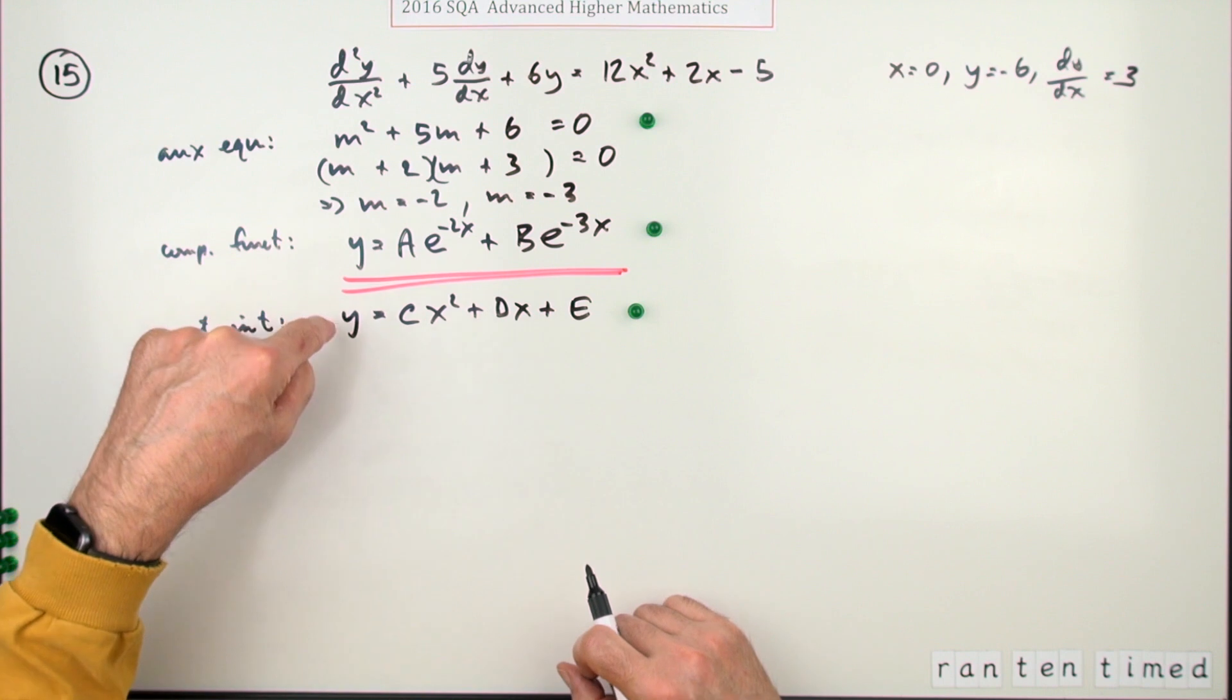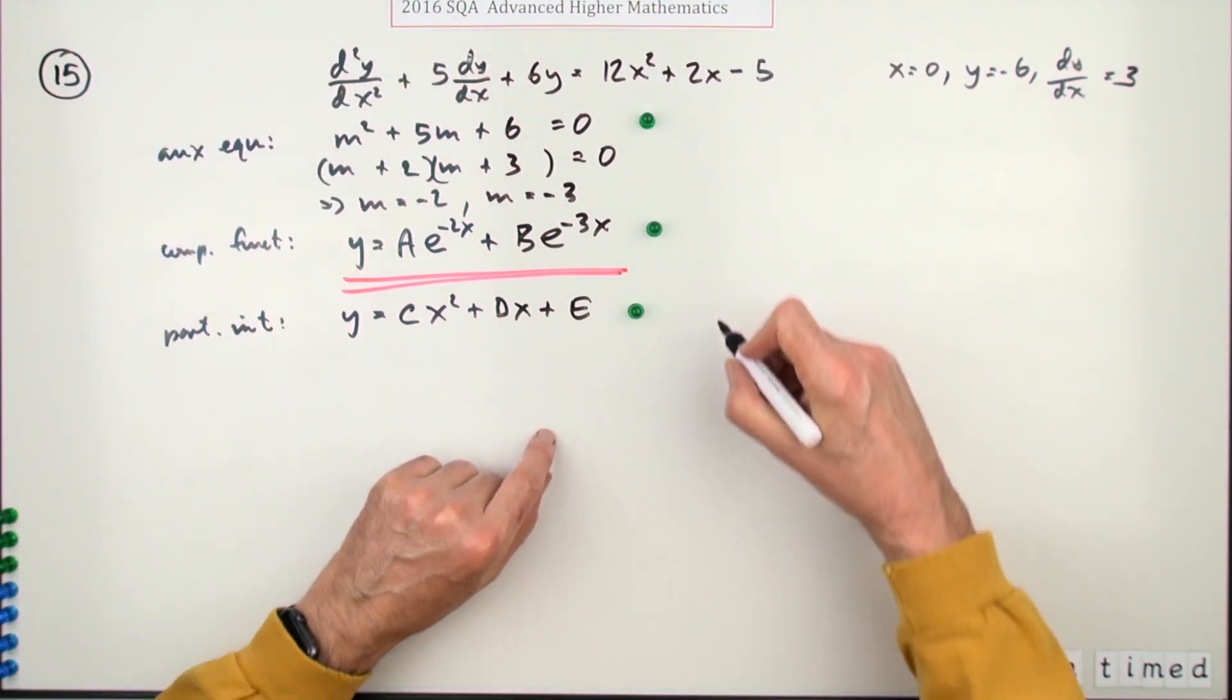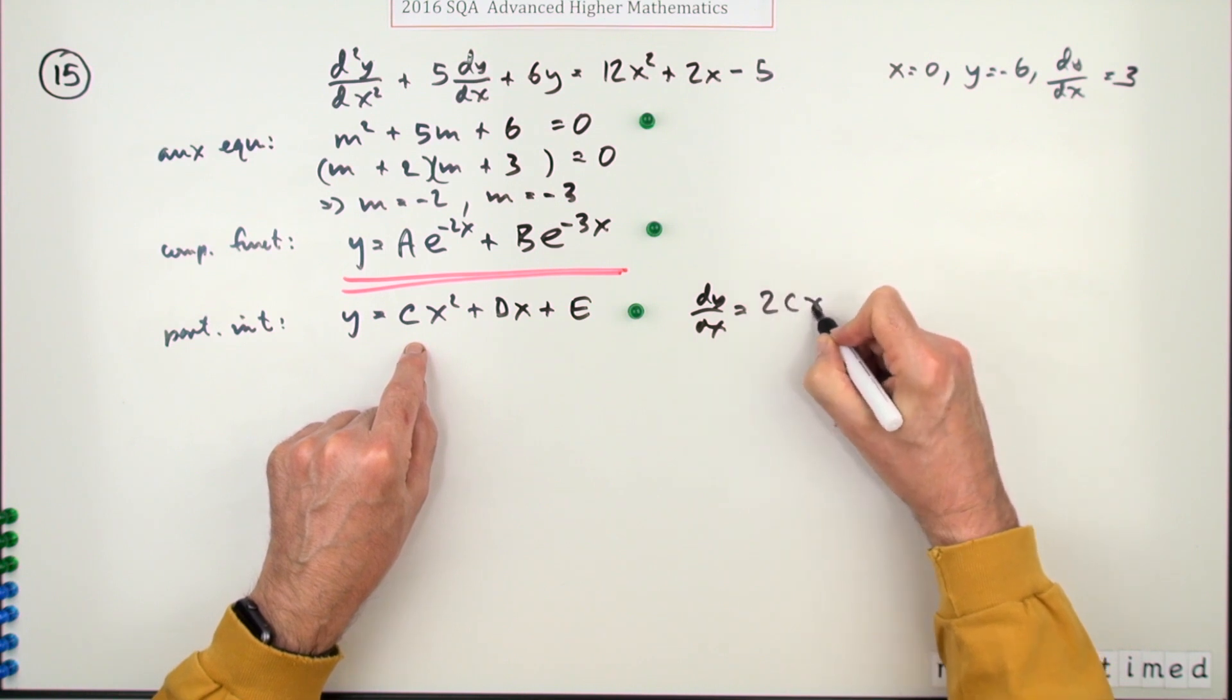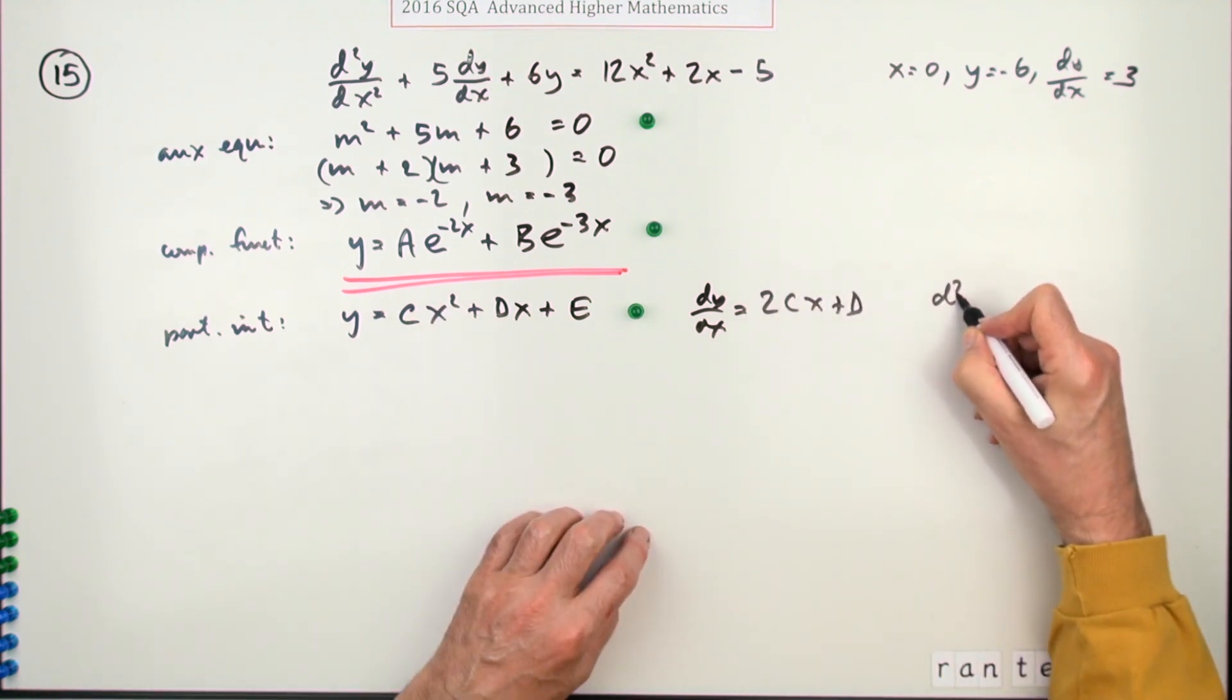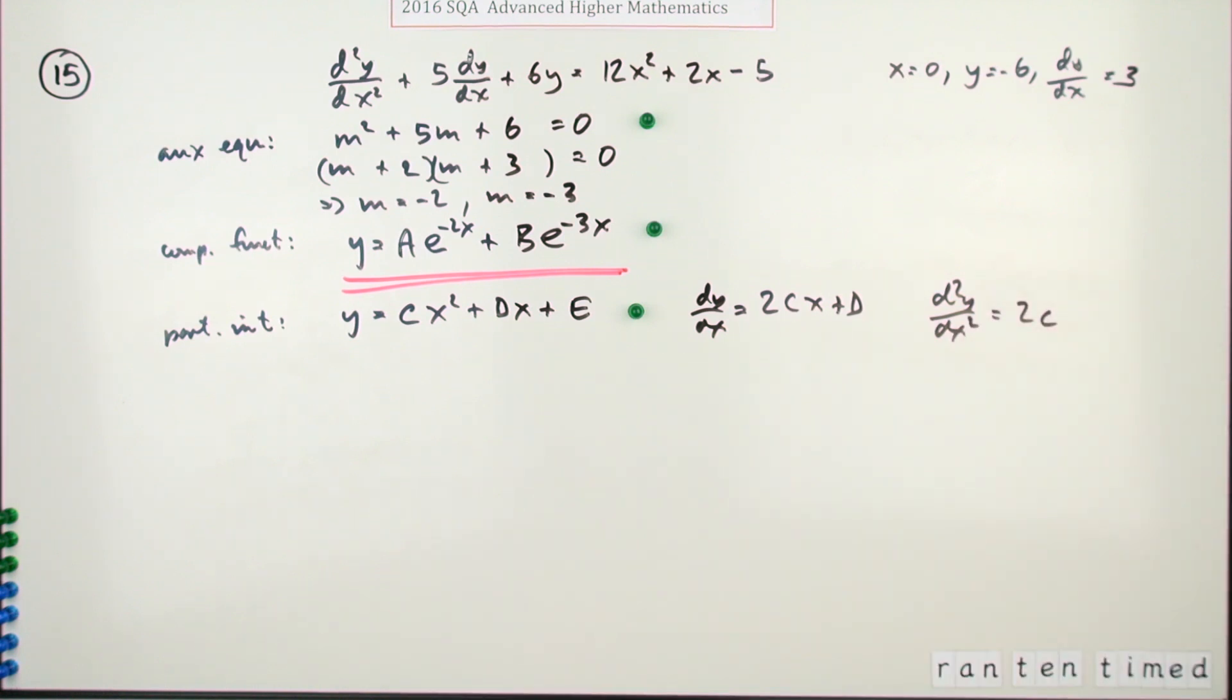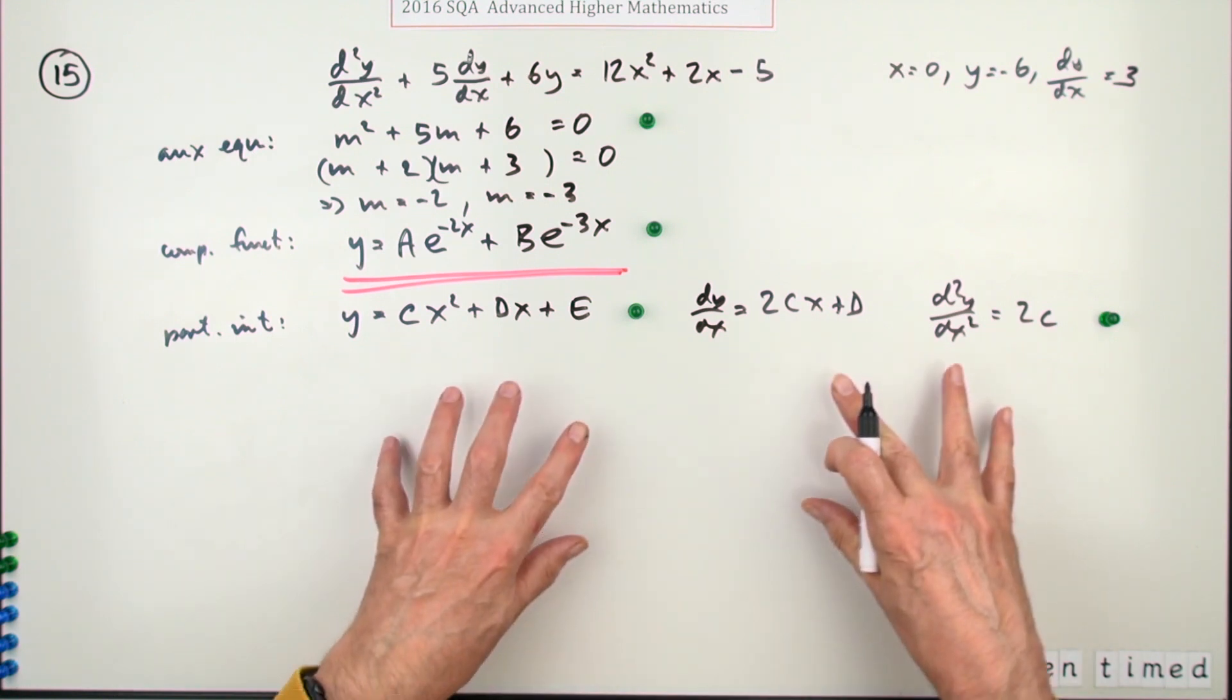Now I need to feed this in, so I'll need the two derivatives. So the first derivative will be 2cx and that will just be plus d. And the second derivative will be just 2c. Doing that gets a mark.